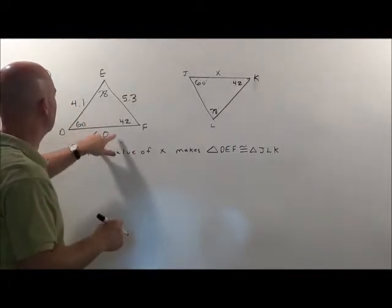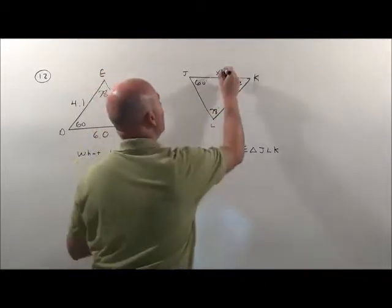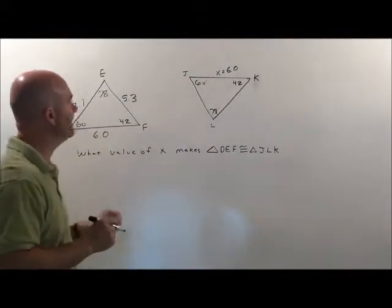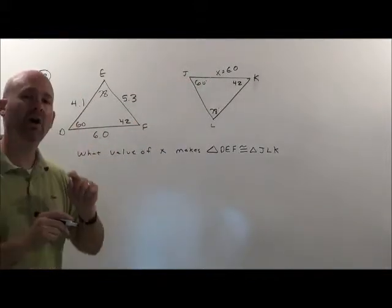So this side was 60 and 42 with this measurement of 6. So x right there is going to have to be 6.0 also in order to make the two triangles congruent.